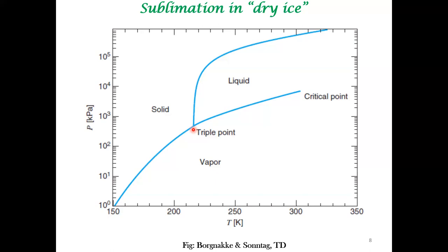The simple answer for why some substances sublime and others do not is that you have to compare the triple point pressure of the particular substance to atmospheric pressure. If the triple point pressure is above atmospheric pressure, the substance will sublime at atmospheric conditions.